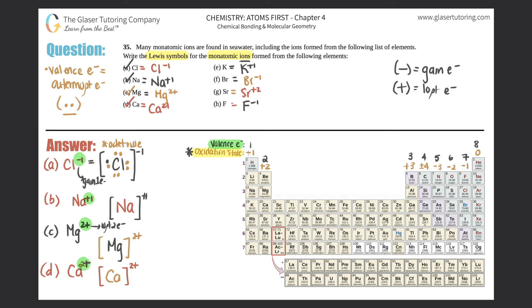Halfway through! Potassium is a plus one charge. Potassium is in group one — it has one valence electron. So I write the one electron here, but now it tells me that it's a plus one charge, meaning that you lost one electron. So you have to get rid of the one that you drew. When potassium becomes an ion, it doesn't have any valence electrons anymore. And E is done.